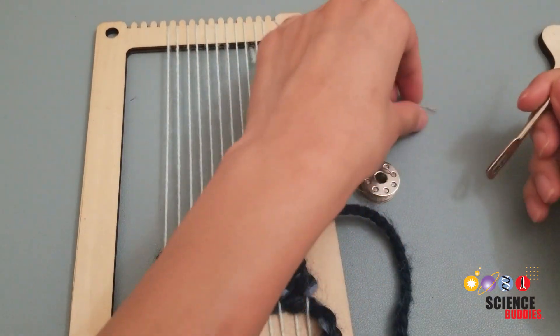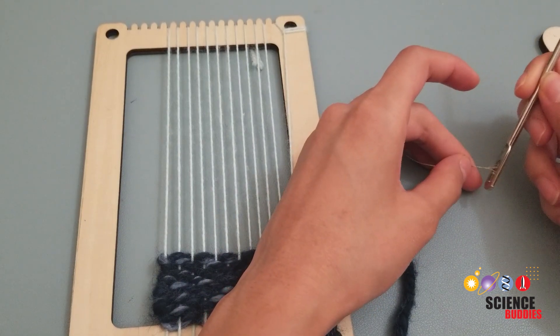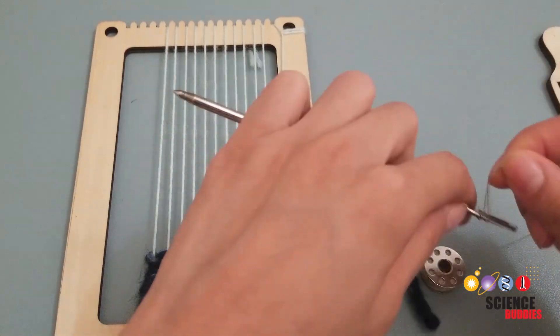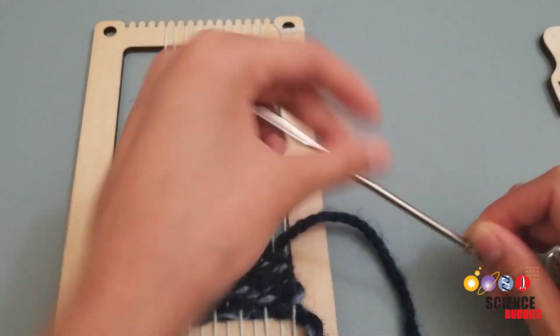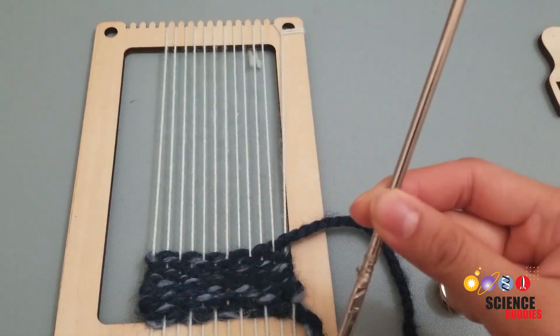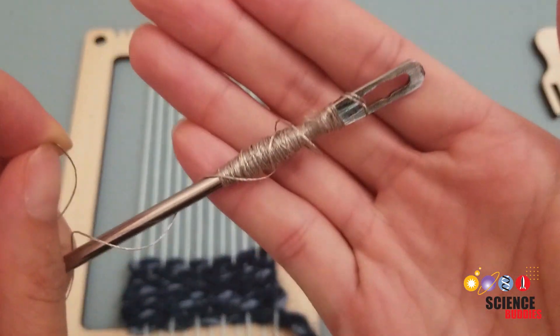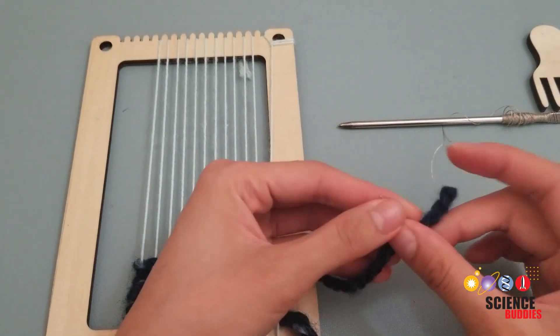Because conductive thread is much thinner, you will need a lot more. Cut about 10 feet of conductive thread and thread through your tapestry needle. To make weaving easier, wrap your thread around your tapestry needle and leave about 8-9 inches of conductive thread at the end. Begin the conductive thread section by tying the end of the conductive thread to the excess yarn from the previous section.